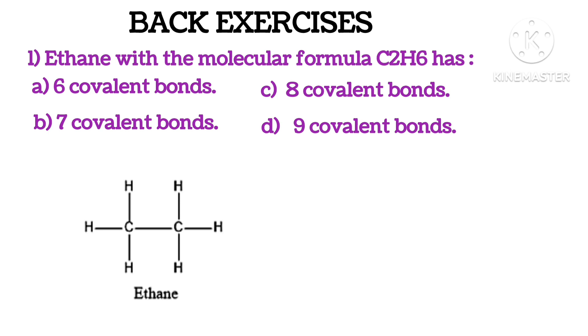Here is the structure of ethane. You can see it has 1, 2, 3, 4, 5, 6, and 7 covalent bonds. So the correct answer is option number B.